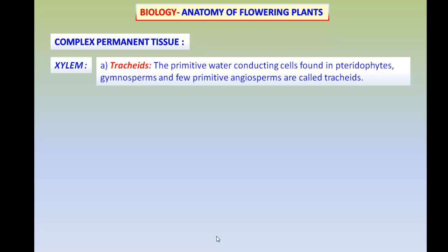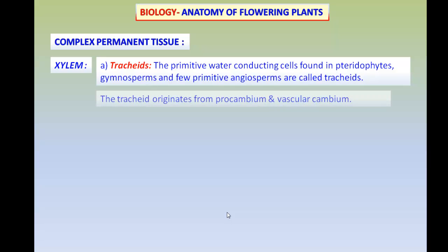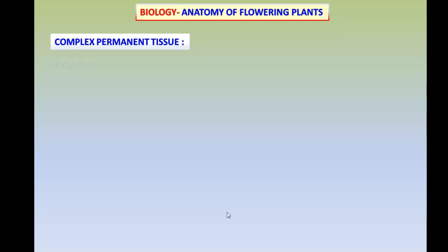Tracheids are primitive water-conducting cells that originated first among the pteridophytes and have developed very well in gymnosperms. Among the angiosperms, they can be seen in very small numbers, and only in very primitive angiosperms.